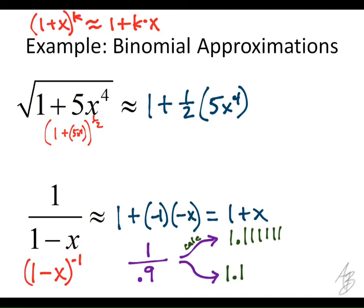It would be even more accurate if we used a smaller value. If we put in 0.05 — let's say we want to know what 1 over 0.95 is — that would be really close to 1.05. So the smaller x is, the more accurate this is going to be. This is just a special case of linearization, where if we have a binomial 1 plus something raised to any power, we can approximate it fairly easily and get rid of the exponent. And exponents, especially before we had calculators, were not easy to work with. So being able to get rid of the exponents was really valuable.